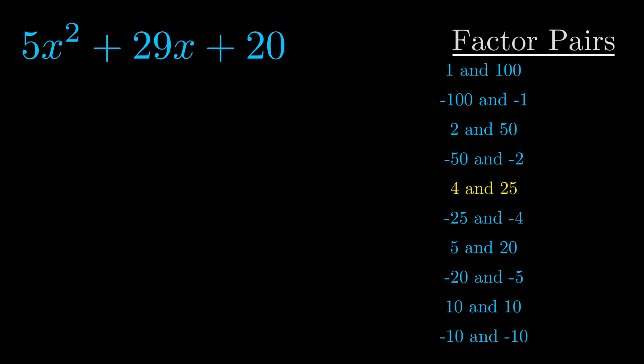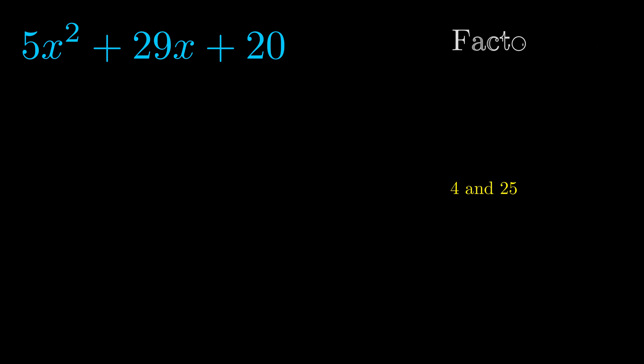And really this is the only factor pair that we need. Now once we have this factor pair, what we want to do is use it to split up the b value.